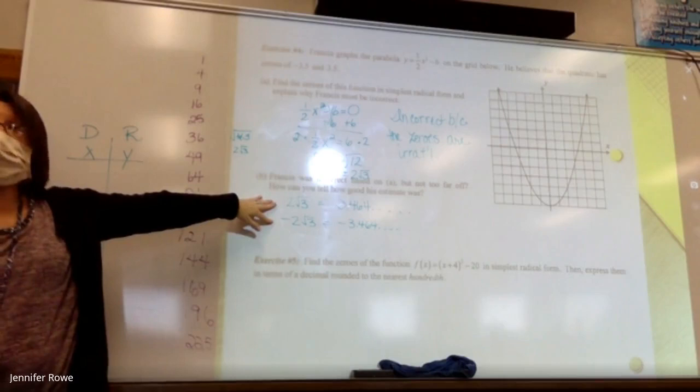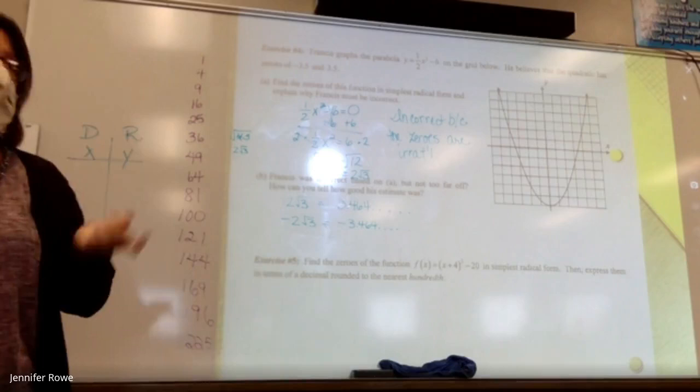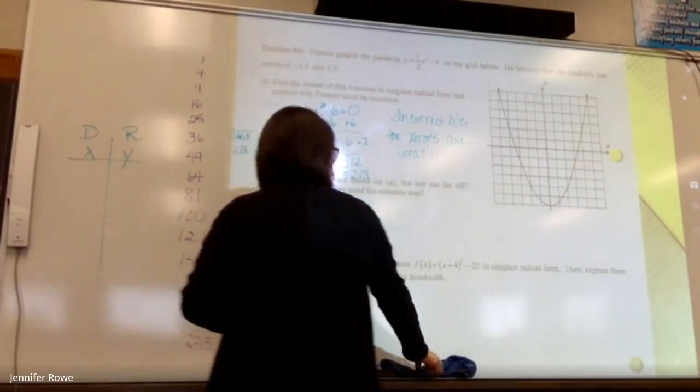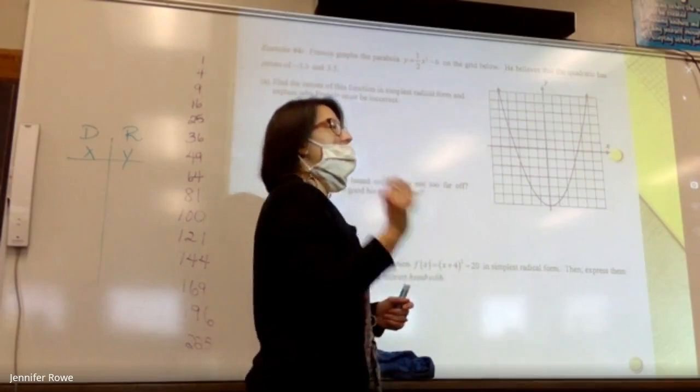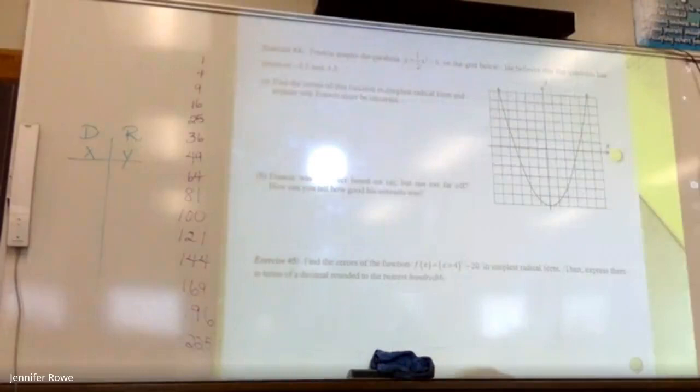So it is close, isn't it? It's pretty close. 3.464 dot dot dot. Yes, but we can't take something that's irrational and call it rational. Oh look, we've got time to do number five real quick. Seriously? Yes. One of them has a point. Three, four, six, four dot dot. All right, finally, number five.